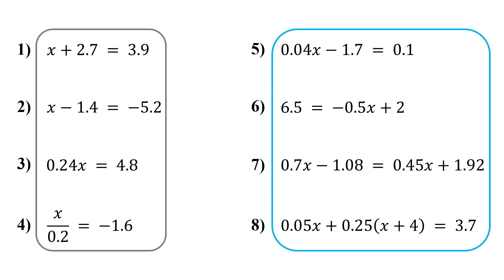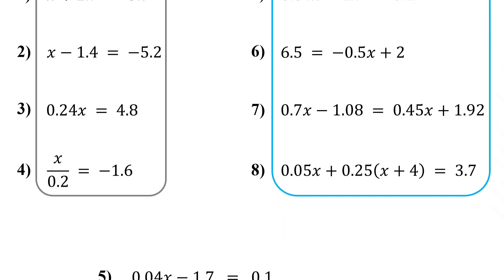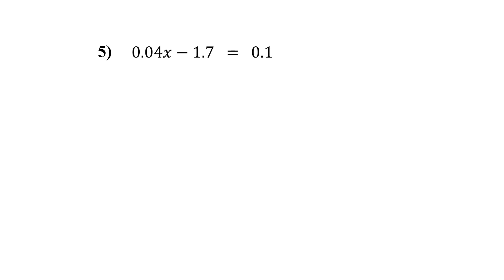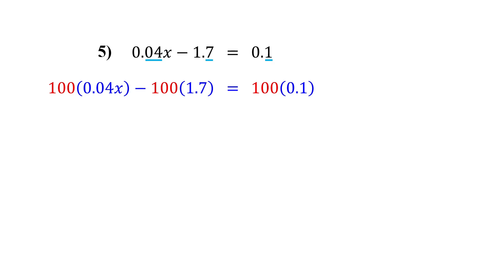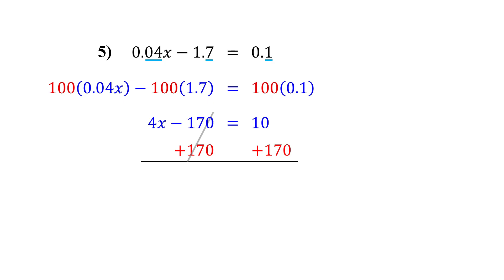The next set of examples will be a bit more complex, so we'll solve them by clearing the decimals first. Check how many digits are after the decimal point in each number. In 0.04, there are two digits. In 1.7 and 0.1, there's one digit. So to get rid of all the decimals, multiply every term by 100 — that moves the decimal point two places to the right. So 100 times 0.04x is 4x. 100 times 1.7 is 170. And 100 times 0.1 is 10. Now there are no decimals. Just solve it like a regular two-step equation. First, isolate the variable term by adding 170 to both sides — these cancel out, leaving 4x. On the right, we get 180. Now divide both sides by 4. That gives us x equals 45.